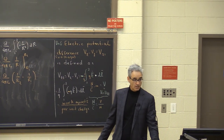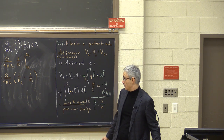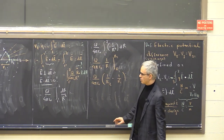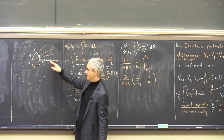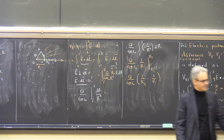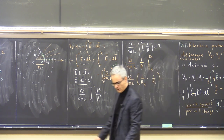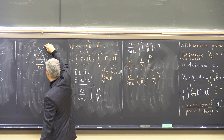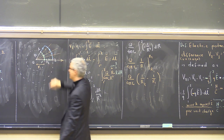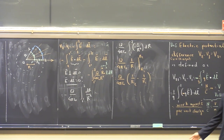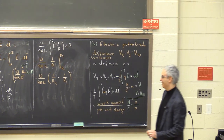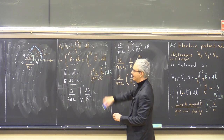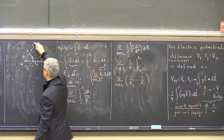Student question: why choose the path radially for r2 but along the arc for r1? That's a great question — you could do the opposite as well and get exactly the same result, guaranteed, because the integral is path independent. In that case you would get the integral from 1 to 1 double prime along a radial segment giving a non-zero contribution, and then zero from 1 double prime to 2 along the arc.